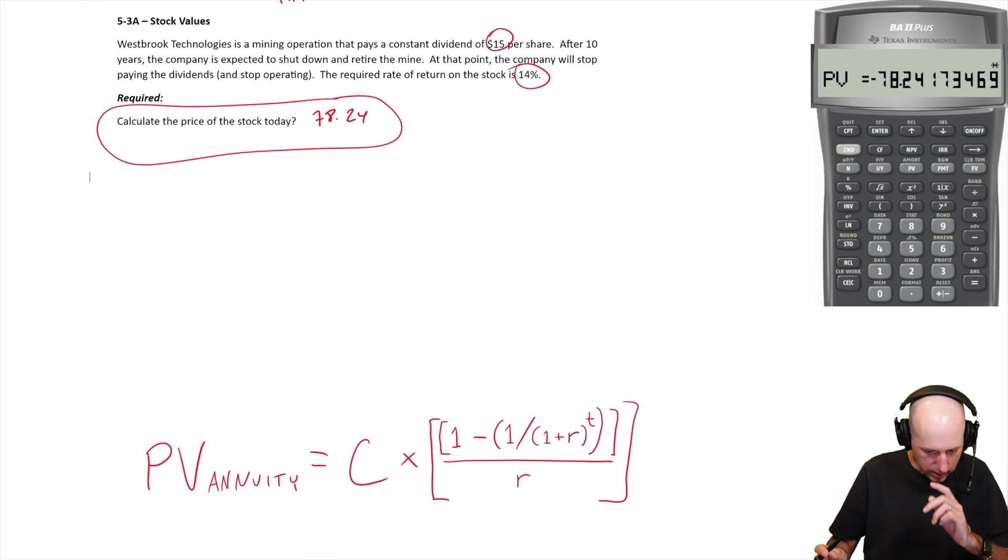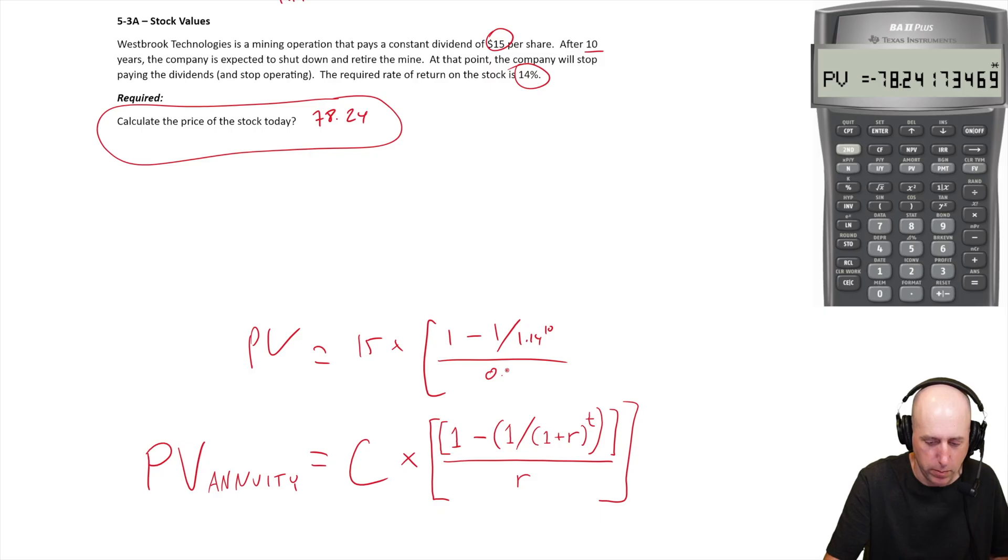We're solving for PV of an annuity. The c is the amount of the regular payment which is this $15 dividend, times one minus one over one plus r, 1.14 to the power of 10 years, all divided by 0.14. Let me get some brackets in place here.